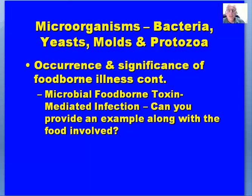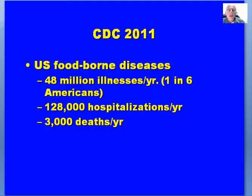There is also foodborne toxin-mediated infection — the question for you is: can you provide a definition of this and an example of a food that might be involved with that particular foodborne pathogen? Looking at CDC data from 2011 — they don't change these values very often — they estimate about 48 million illnesses per year, which includes about one in six Americans, 128,000 hospitalizations per year as a result of foodborne disease.